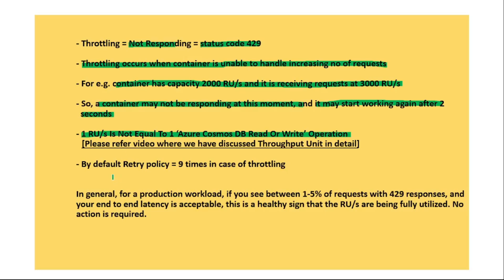If we are working in .NET SDK, that is in C# code, and if we get throttling, then by default that database query will be attempted 9 times — that is the default behavior. But we can create our own custom retry policy and configure this setting, not just for the throttling error but for other status codes as well. We can specify the status code, how long it should wait, and the max number of times the DB operation should be attempted.